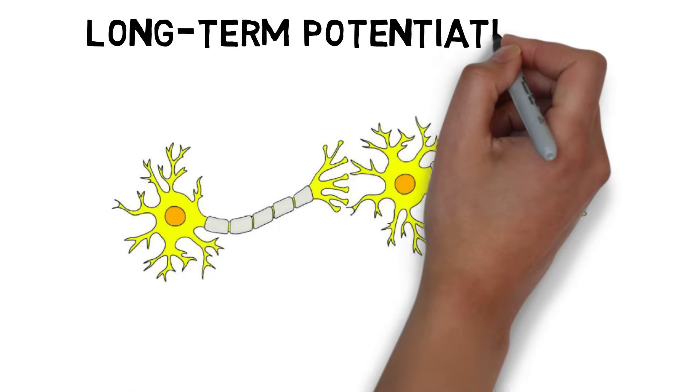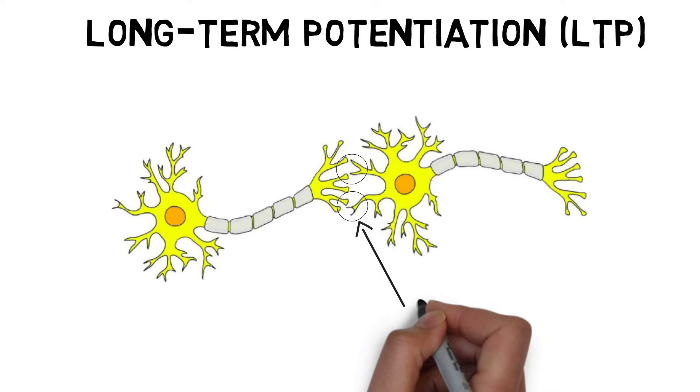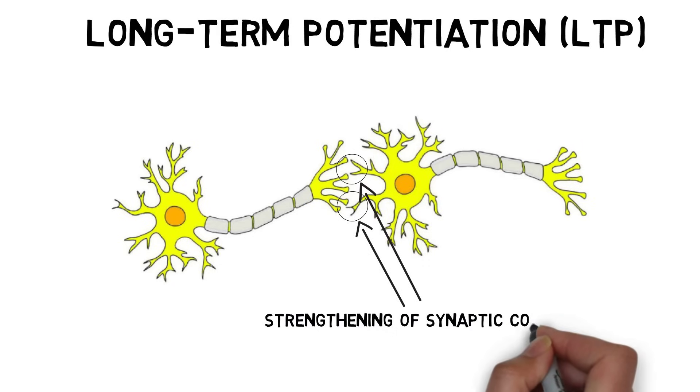LTP is a process by which synaptic connections between neurons become stronger with frequent activation. LTP is thought to be a way in which the brain changes in response to experience, and thus may be a mechanism underlying learning and memory.